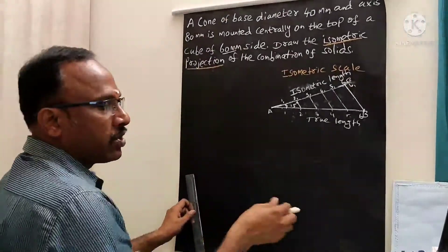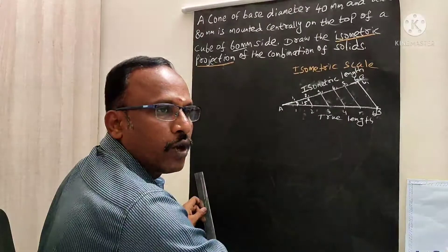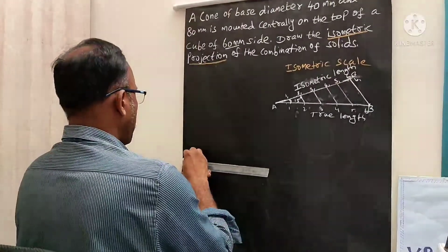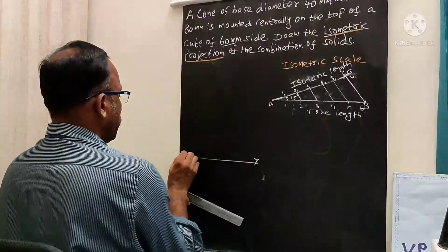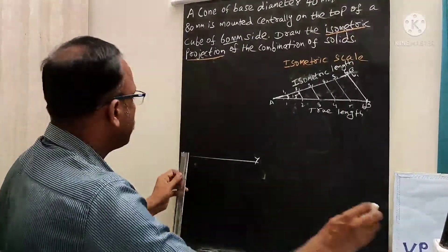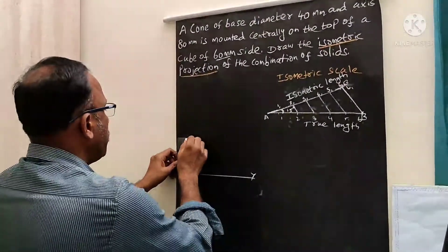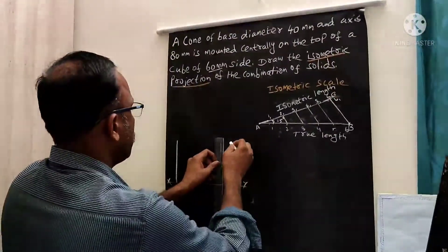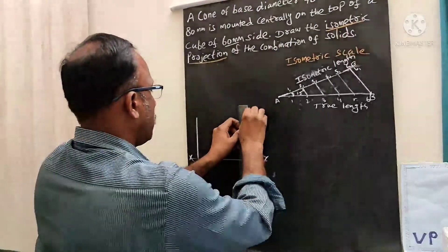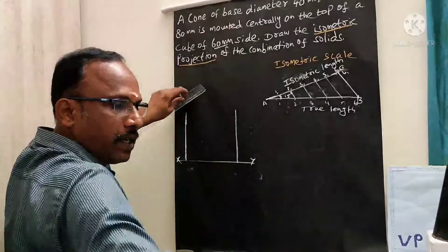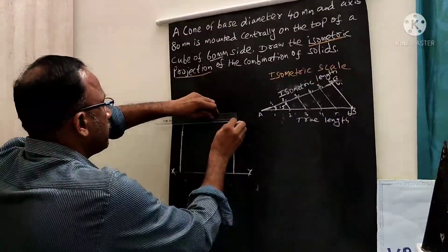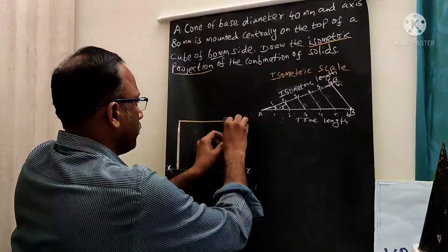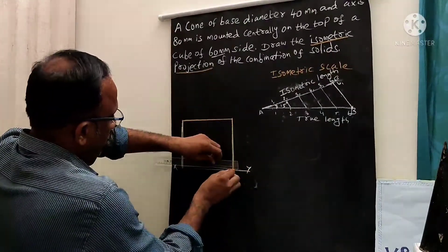Now coming into the problem. First draw the simple top view and front view of this combination. Draw one XY reference line — this is the X and Y reference line. Now draw the cube. The front view of the cube — this side is 60 mm. The front view of this cube will be seen as a square, because it is a cube.